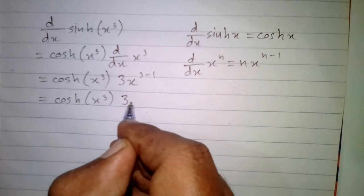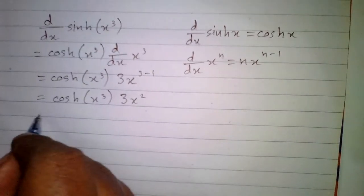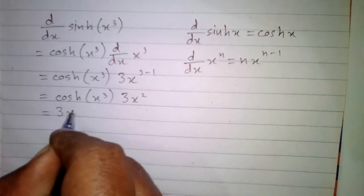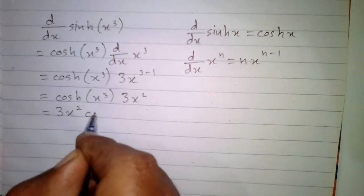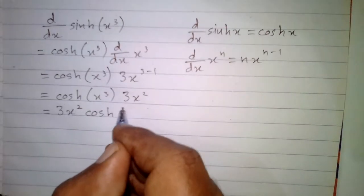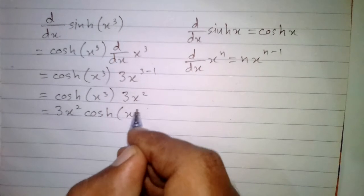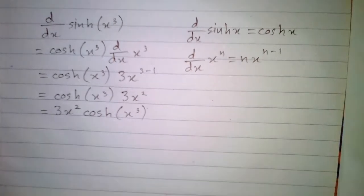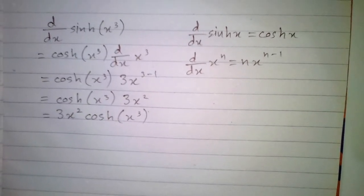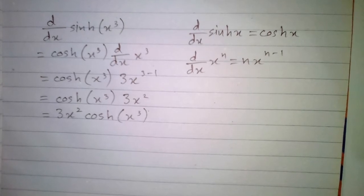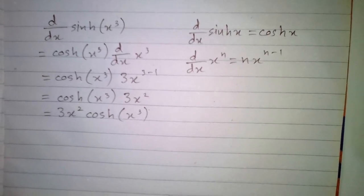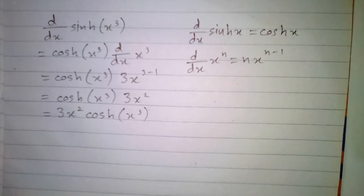This can be written as 3x square multiplied by hyperbolic cos of x cube. So the derivative of hyperbolic sine of x cube is 3x square hyperbolic cos of x cube.